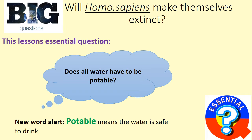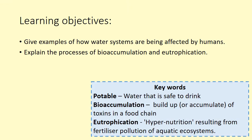Today we are looking at water pollution, and we want to think about: does all water have to be potable? Potable might be a new term — it means the water is safe to drink. It's different from pure water, and you'll look at this again in chemistry in year 11. By the end of this video you should be able to give examples of how humans are affecting our water systems.